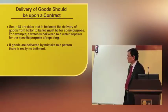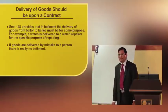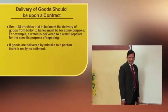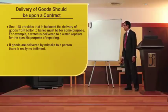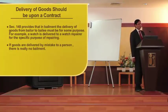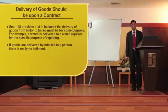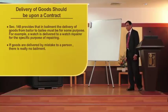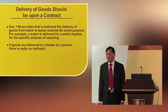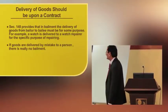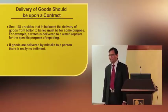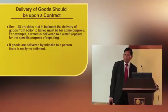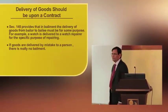The third essential is that delivery of goods must be for a specific purpose. If there is no purpose, there is no bailment. For example, you are delivering a watch to the watch repairer for repairing — here repairing is the purpose, and the watch is delivered to the watch repairer for the specific purpose of repairing. If any goods are delivered to any person by mistake without any purpose, in the true sense there is no bailment.